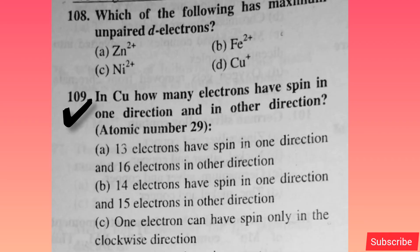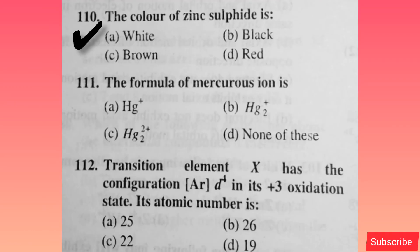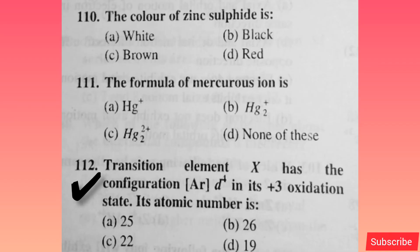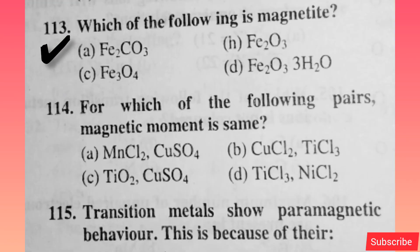In Cu, how many electrons have spin in one direction and in the other direction? Option B is correct. The color of zinc sulphide is white — option A is correct. The formula of mercurous ion is — option C is correct. Transition element X has a certain configuration in its +3 oxidation state; its atomic number is 25 — option A is correct. Which of the following is magnetite? Option C is correct.